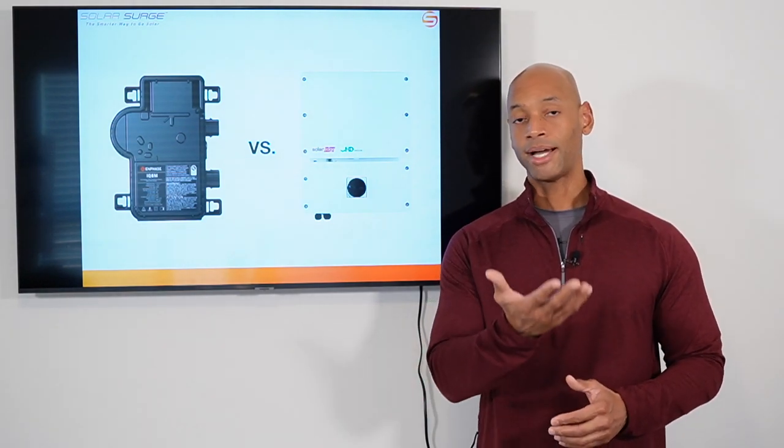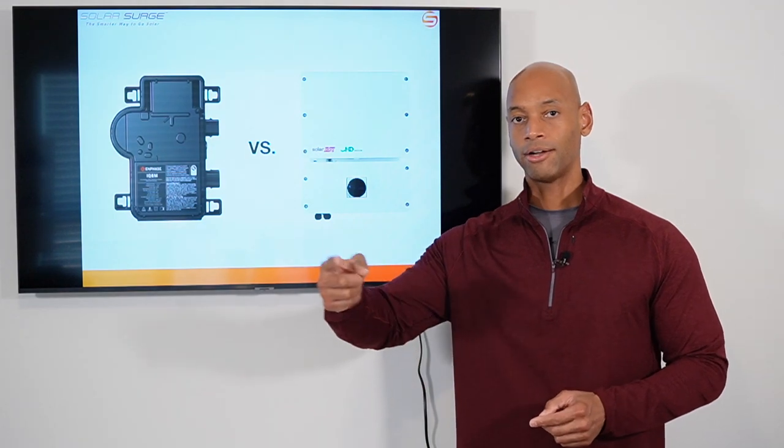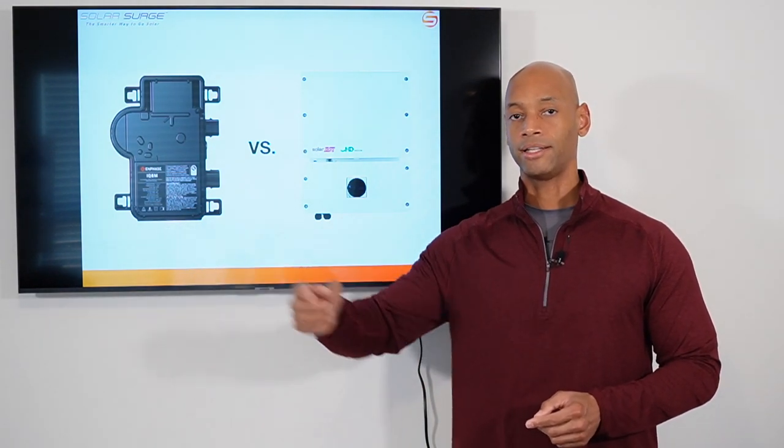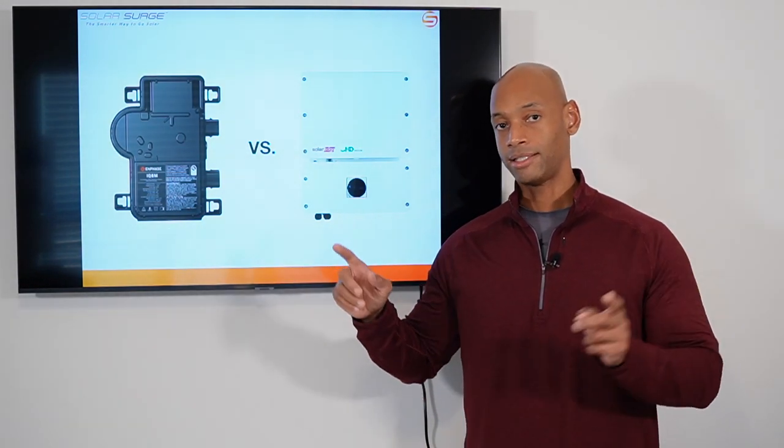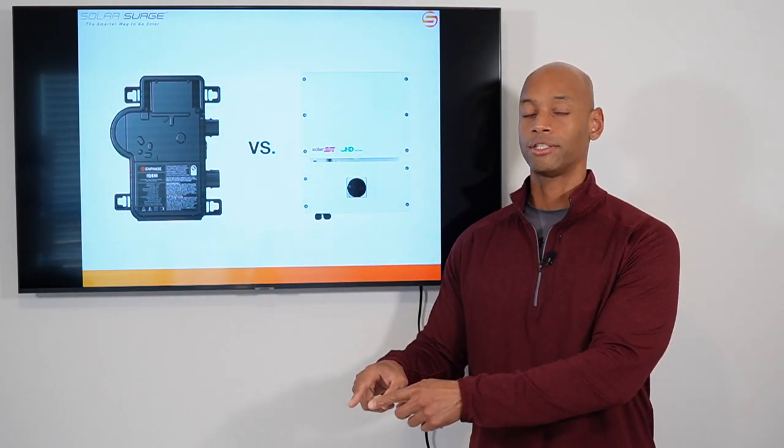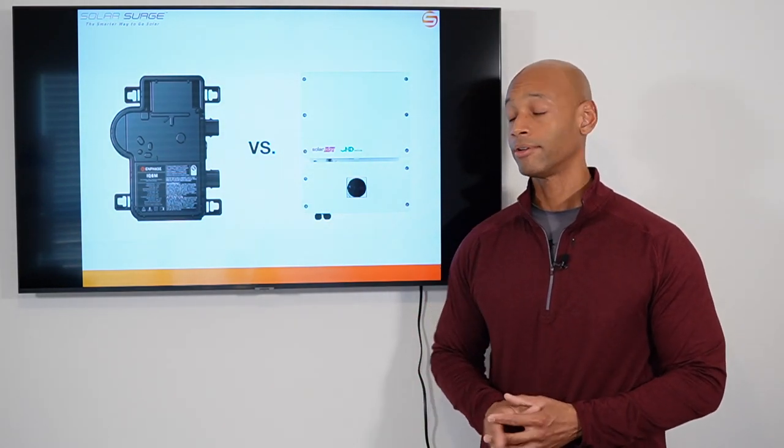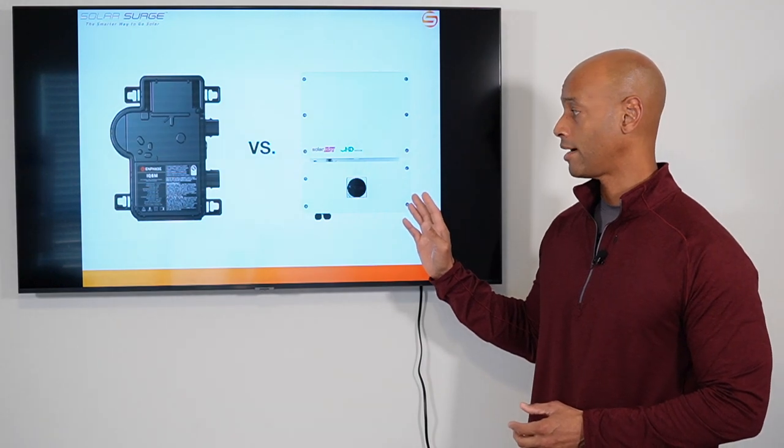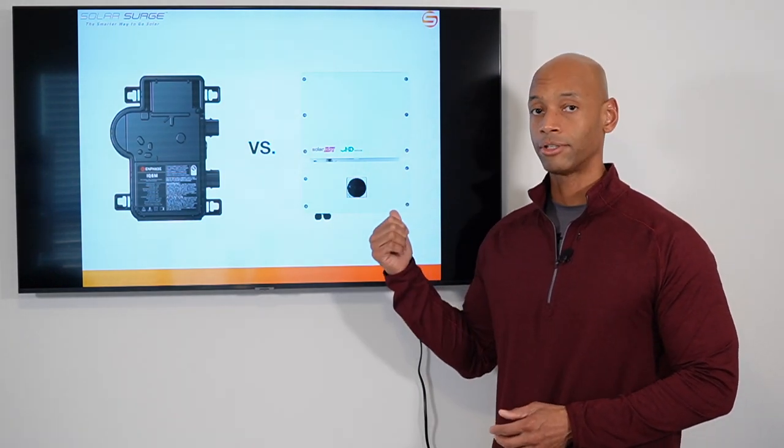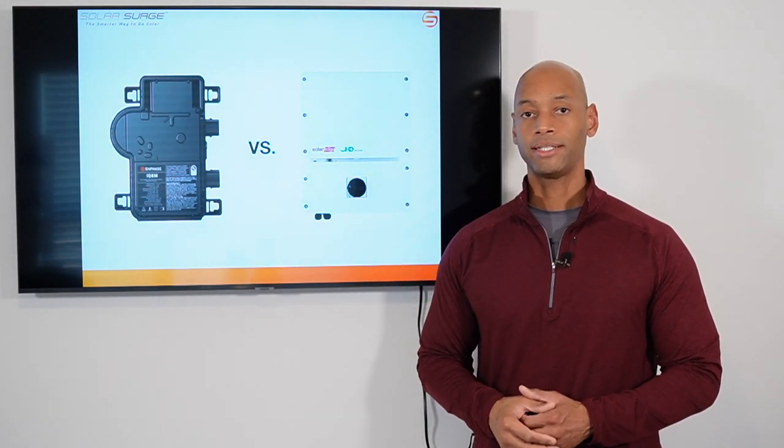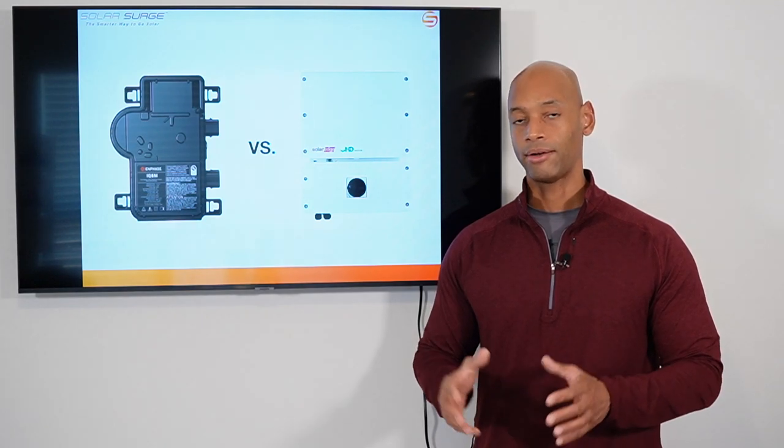You can basically put the optimizer under the panel, daisy chain all the optimizers together in a series string, and then again send just one or maybe two circuits from the roof down to the ground to the central inverter down there. And of course the central inverter would still do the DC to AC conversion at one place.